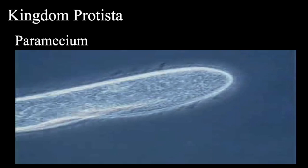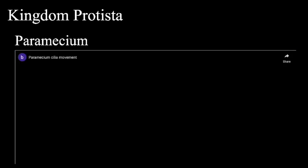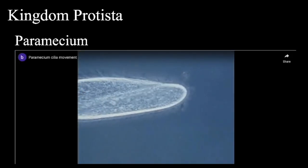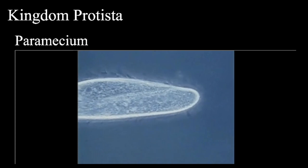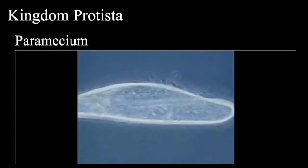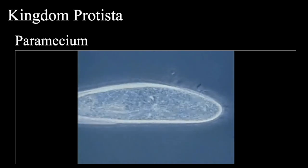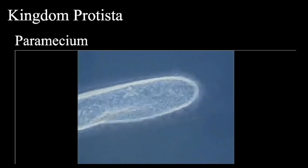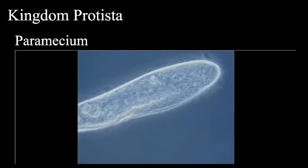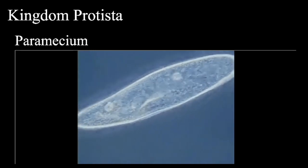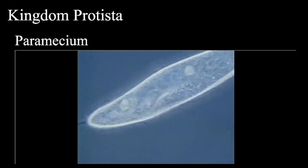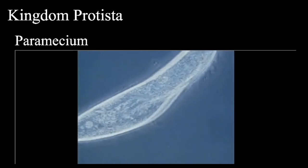Another way a paramecium is able to move is that it belongs to a group known as ciliates — single-celled organisms that at some stage in their life cycle possess cilia. Cilia are short hair-like organelles used for locomotion and food gathering.